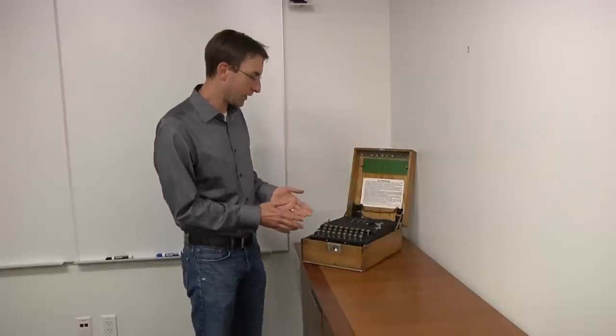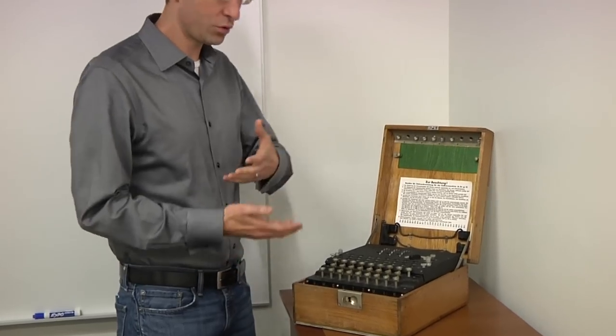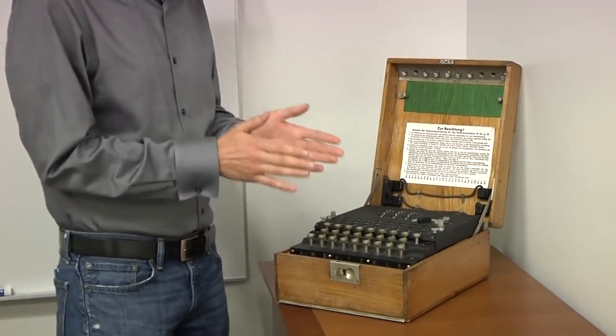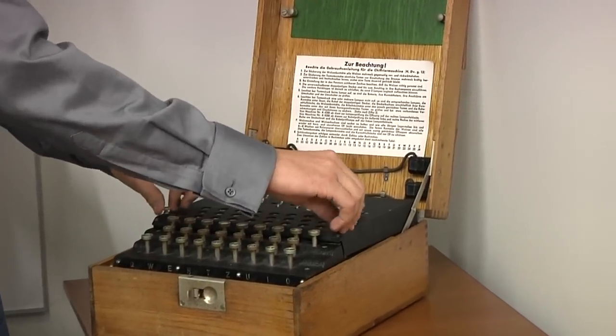Here we have one of the few surviving World War II Enigma machines. It's an entirely mechanical machine. There are no transistors, no tubes, but there is electricity and switches and light bulbs. That's really all that's needed to make it operate. Let's open it up here and let me show you the different pieces inside.